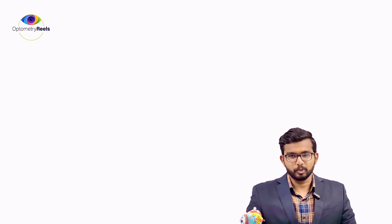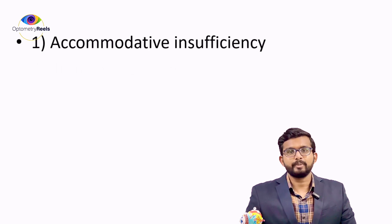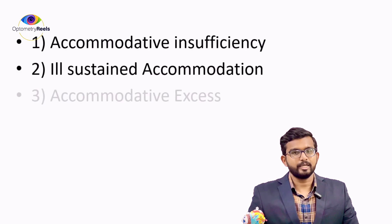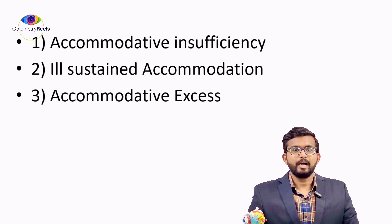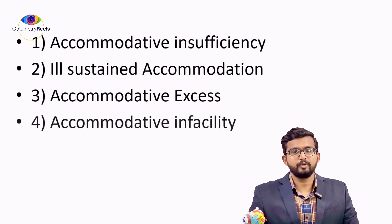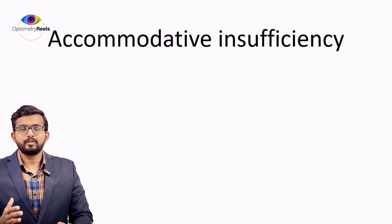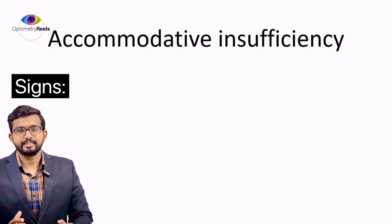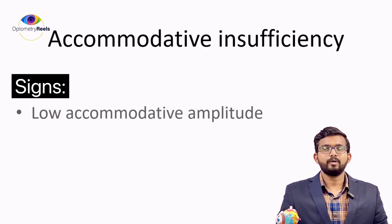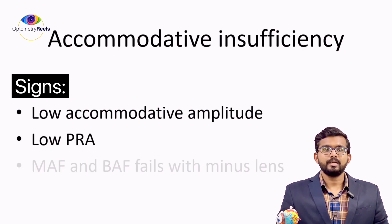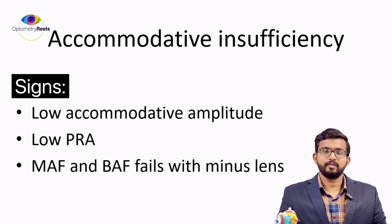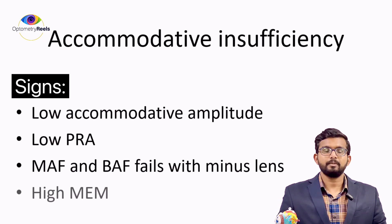We'll cover accommodative insufficiency, sustained accommodation, accommodative excess, and accommodative infacility. Starting with accommodative insufficiency: there will be low amplitude of accommodation, low PRA, and monocular and binocular accommodative facility will show minus lens difficulty, and MEM will be high.